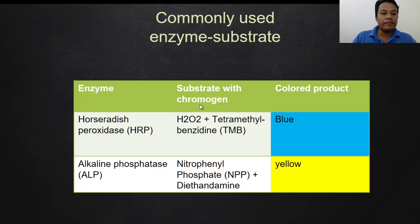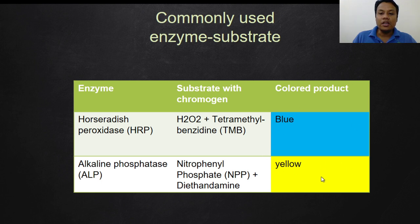Commonly used enzyme-substrate pairs: First, horseradish peroxidase (HRP), whose substrate is hydrogen peroxide, and the chromogen commonly used is tetramethylbenzidine (TMB). The interaction between HRP and TMB produces a blue colored product, which we observe in a positive sample. Second, alkaline phosphatase (ALP), whose substrate is nitrophenyl phosphate, and the chromogen end product appears in yellow color.